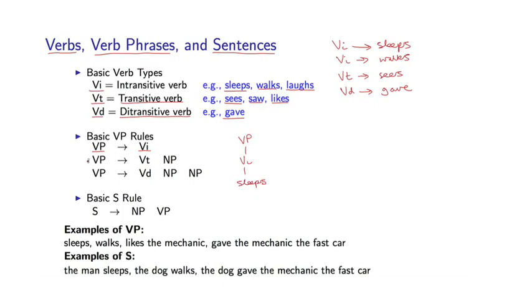A second example here would be the following. So VP goes to VT, and then I could, for example, have sees. Notice that a transitive verb always precedes a noun phrase to form a verb phrase. So verb phrase can be made up of a transitive verb followed by a noun phrase.